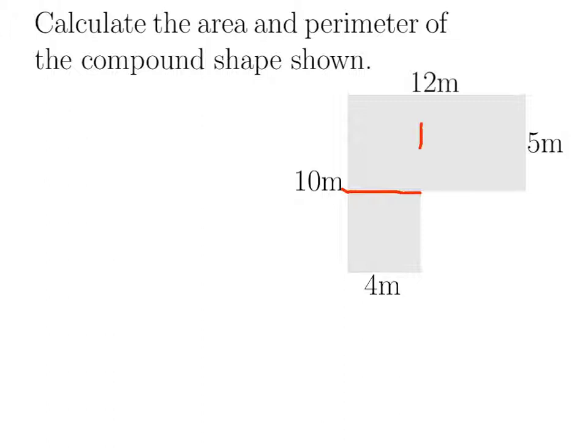I'm going to label these two rectangles P and Q. To find the area of P, we're going to multiply its length, which is 12, by its width, 5. So the area of P will be 12 times 5 metres, giving us 60 metres squared altogether.